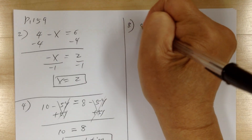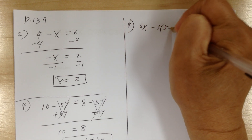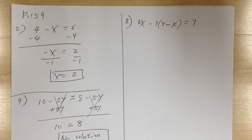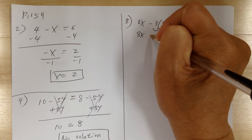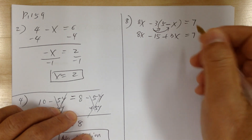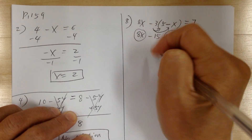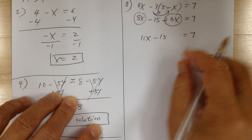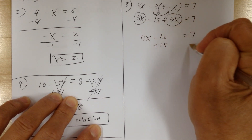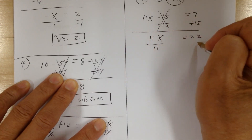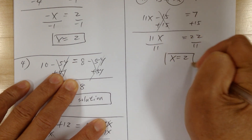Number 8. You have 8x minus 3 times (5 minus x) equal to 7. First, let's get rid of the parentheses by distributing. So 8x, and when you distribute you get minus 15 plus 3x equal to 7. Combine the like terms: you get 11x minus 15 equal to 7. Then plus 15 on both sides, so you get 11x equal to 22. Divide by 11, so x equals 2.